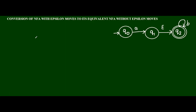The first step is to find the epsilon-closure of Q0. Q0, if the input is null, there is no next state. So we have to write this same state again. Now I have completed the epsilon-closure of state Q0.